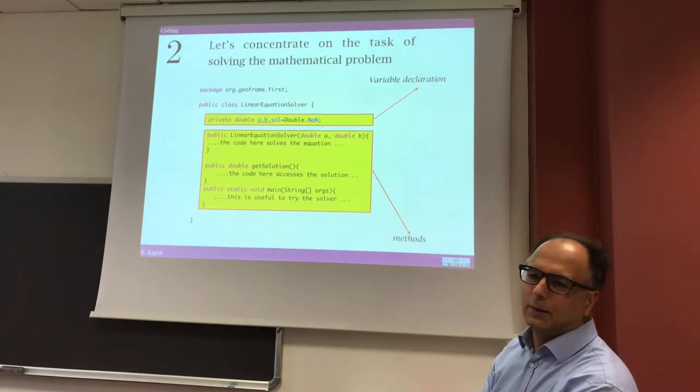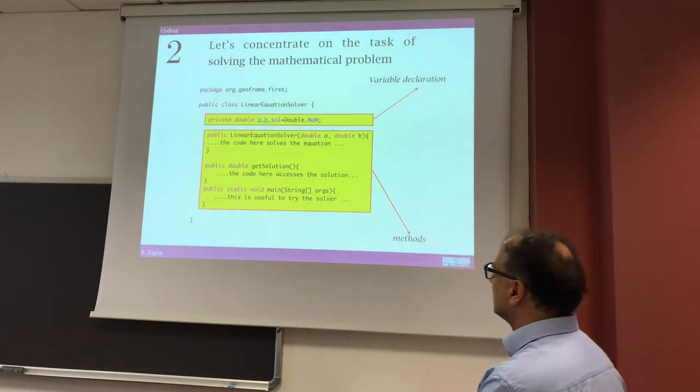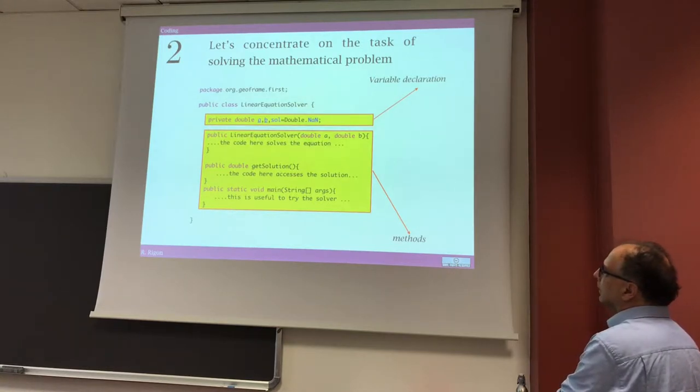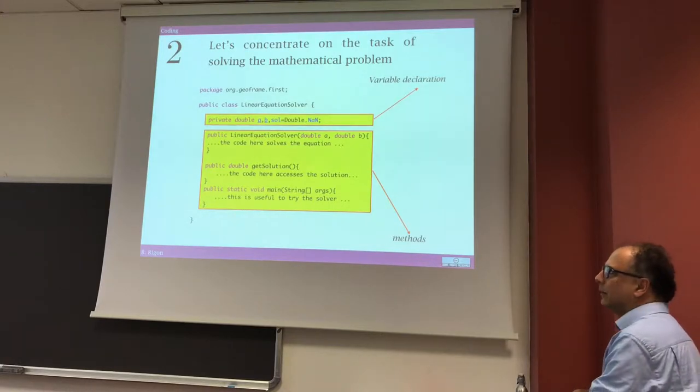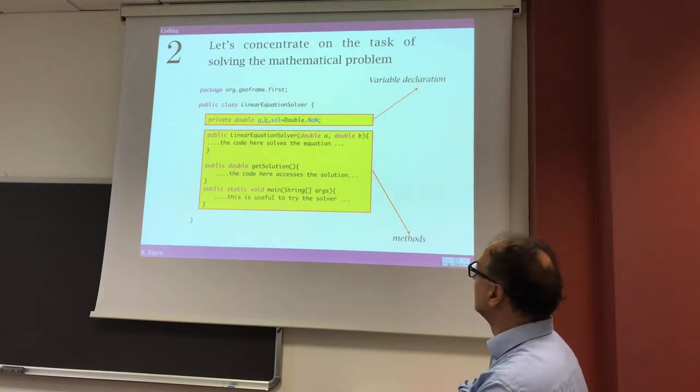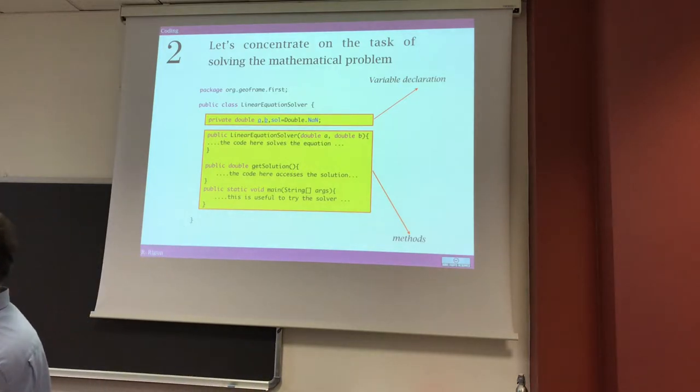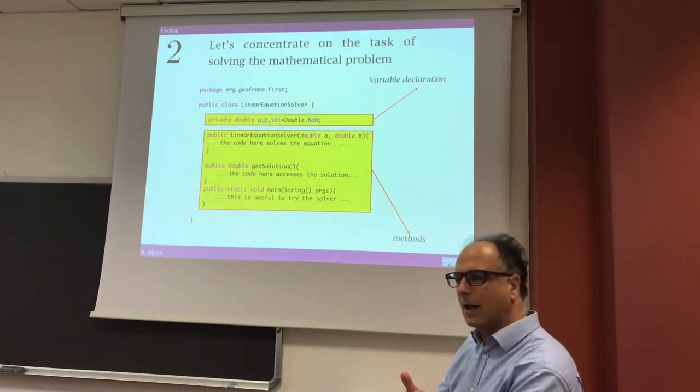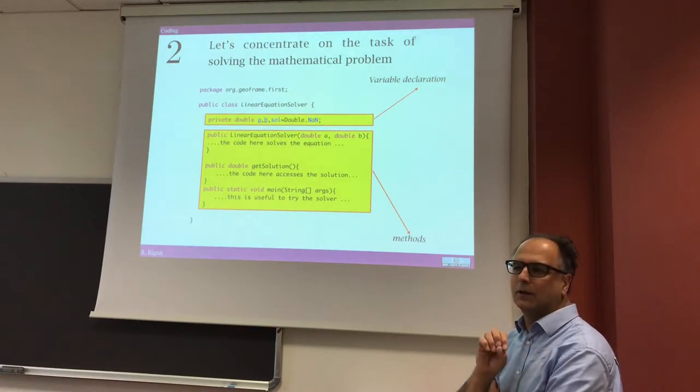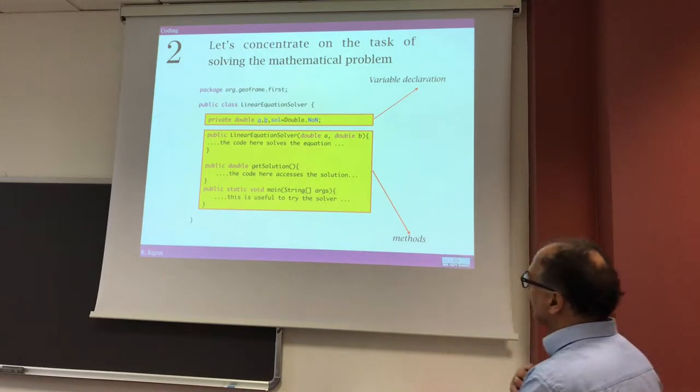For solving the things, we build a class that we call Linear Equation Solver. In this case, I used a way to have all the variables private. In particular, we have three variables: A, B, and Solve, which is the solution. Solve also was initialized to the not a number. I use the class double.NaN, which is not a number. It's a particular sign in Java that allows us to treat things that are strange, not numbers.